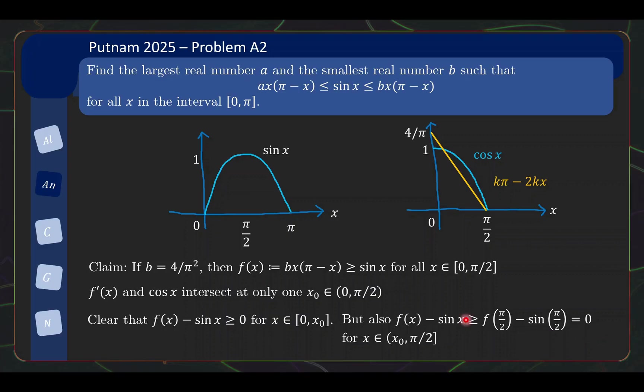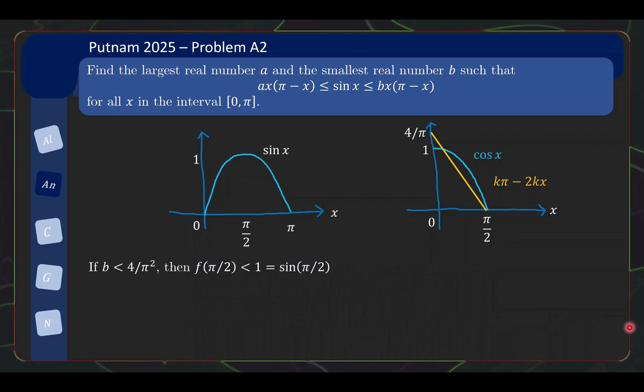So once again, we have the desired inequality. So this is quite an interesting little argument. And lastly, of course, if b is smaller than 4/π², then the inequality fails even at π/2, because the area accumulated is going to be less than 1, which is sin(π/2). So conclusion, smallest b is 4/π². That's it for problems A1 and A2.